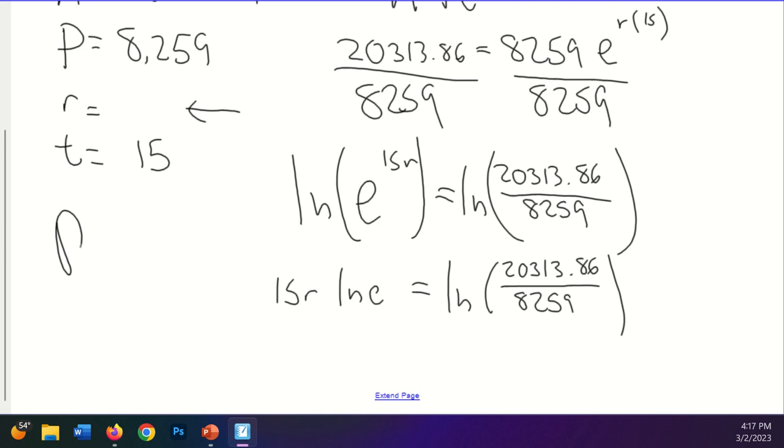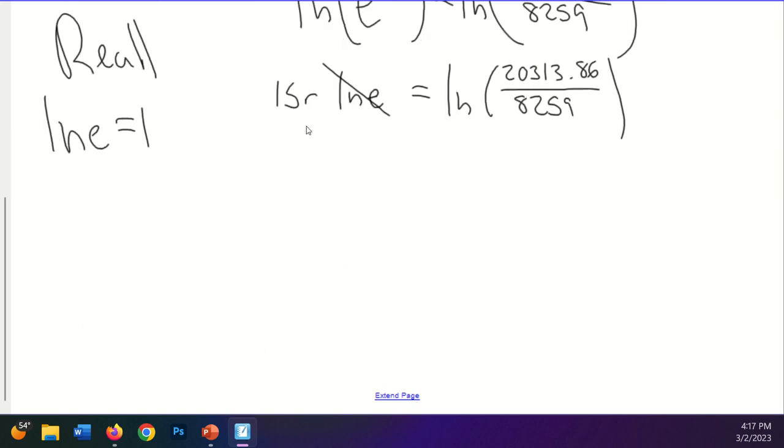And if you recall, the reason we use LN when you have an E is because the LN of E is equal to 1. So this kind of cancels out. And so I end up with R equals the LN of 20,313.86 over 8,259. And then that will be all over 15. And so I'm going to just plug that into Desmos as is.